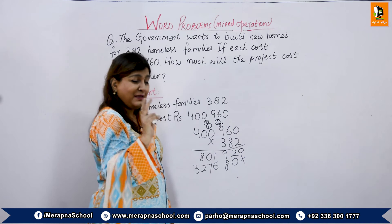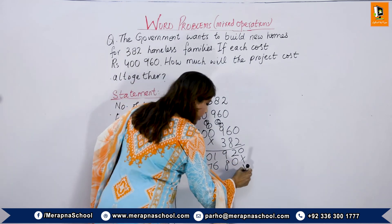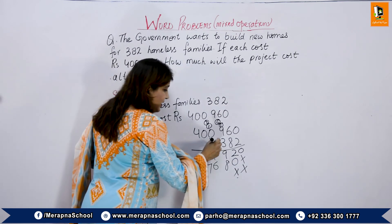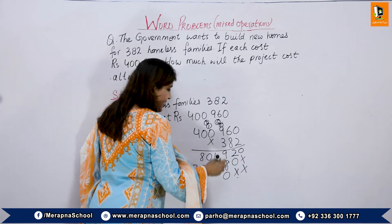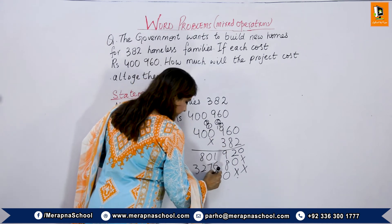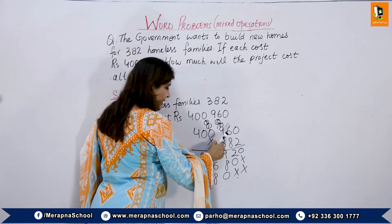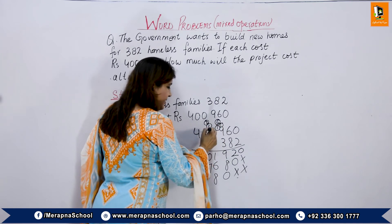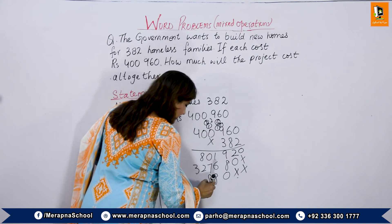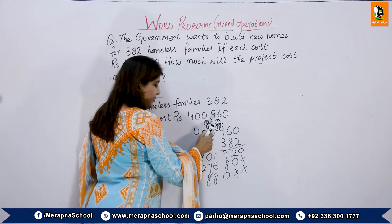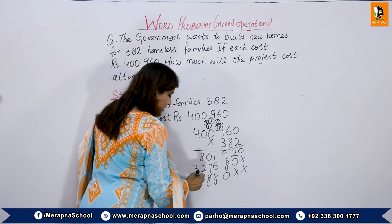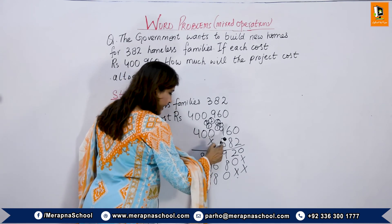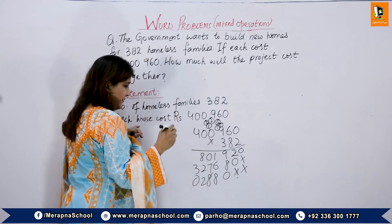We have done two multiplications, so we put 2 crosses. Now we multiply by 3. 3 times 0 is 0. 3 times 6 is 18 — 1 carry. 3 times 9 is 27, plus 1 is 28 — carry 2, write 8. 3 times 0 is 0, plus 2 is 2. 3 times 0 is 0. 3 times 4 is 12. Third partial product: 1,202,880.